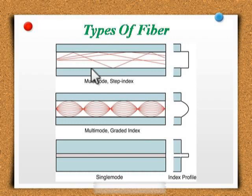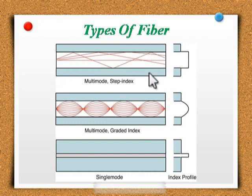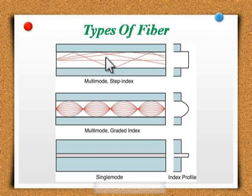Multi-mode fiber is further divided into two different types: step index and graded index. The first one is step index. It has a large core. The light rays tend to bounce around, reflecting off the cladding inside the core. Some rays take a longer or shorter path — some take the direct path with hardly any reflection, while others bounce back and forth taking a longer path.